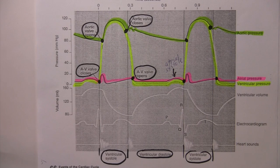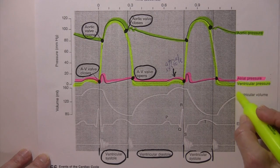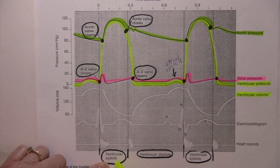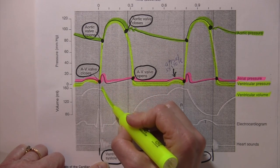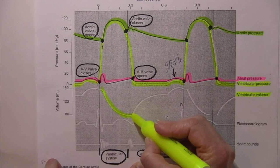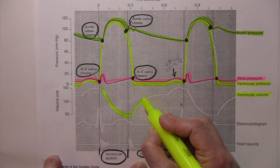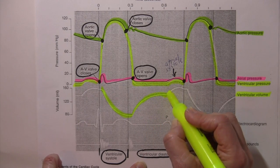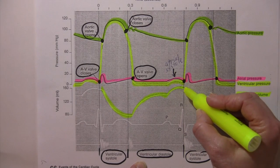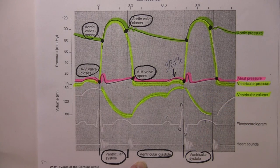Let's take a look at ventricular volume. During ventricular systole, because blood is being ejected, I would expect that volume to go down — which they're showing us. And then during ventricular diastole, expect that volume to go up; this is when the ventricles are filling. So there's your 70% of passive filling, there's your 30% of the atria topping it off, and then the ventricles contract and eject all of that blood. That's the ventricular volume line.